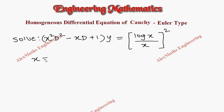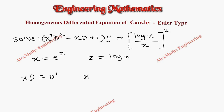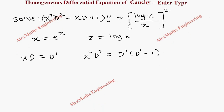So let's take x equal to e power z, or z equal to log x. Using this substitution, we have x·D as D' and x²·D² as D'(D' minus 1).